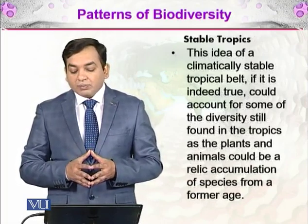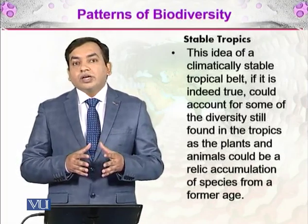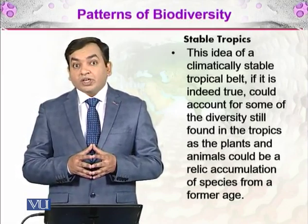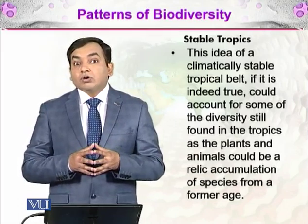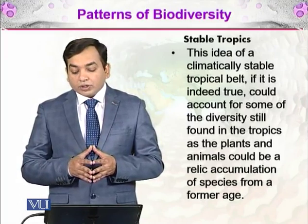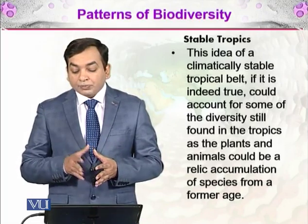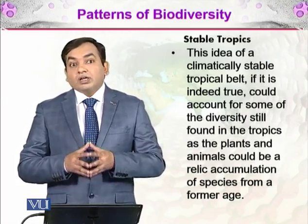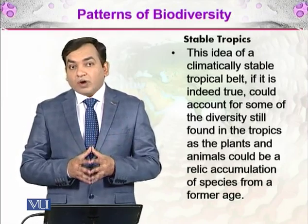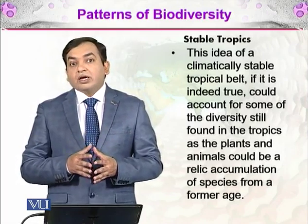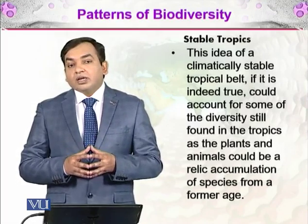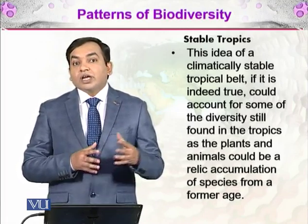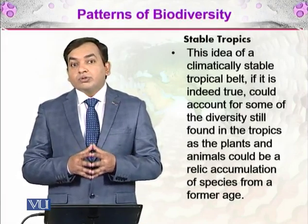The idea of a climatically stable tropical belt is that it is climatically stable — summer is prolonged year-round and there is not much change in temperature. Even during winters, the winters are not harsh on the tropics. This could account for some of the diversity still found in the tropics, as plants and animals could be a relic accumulation of species from a former age. Due to this climatic stability, there was less extinction, and the plants and animals found in the tropics today are ancient relics — descendants of very ancient organisms that survived extinction due to the stable climate.